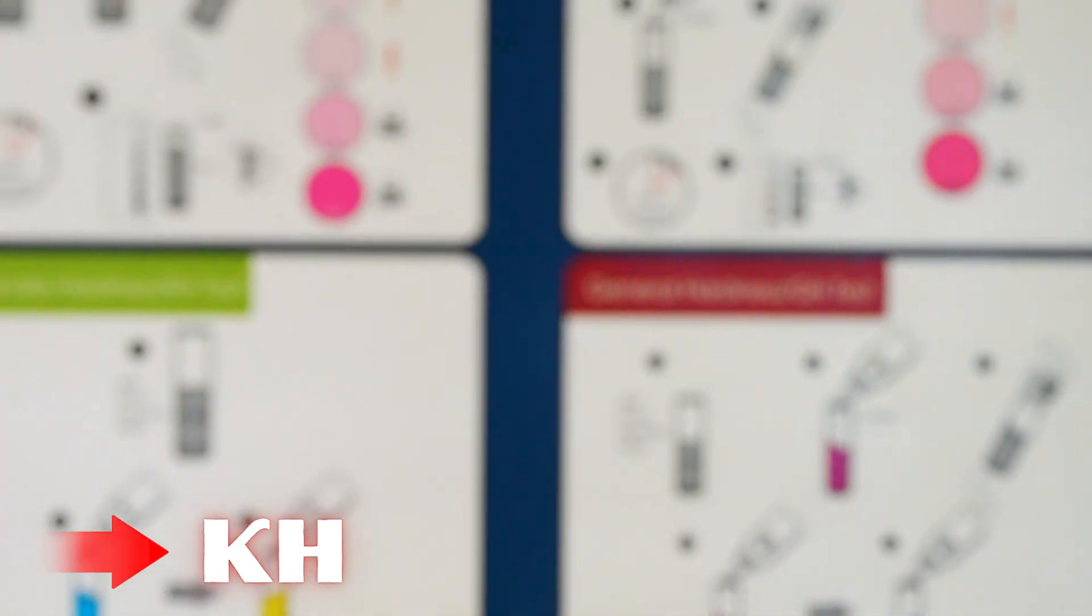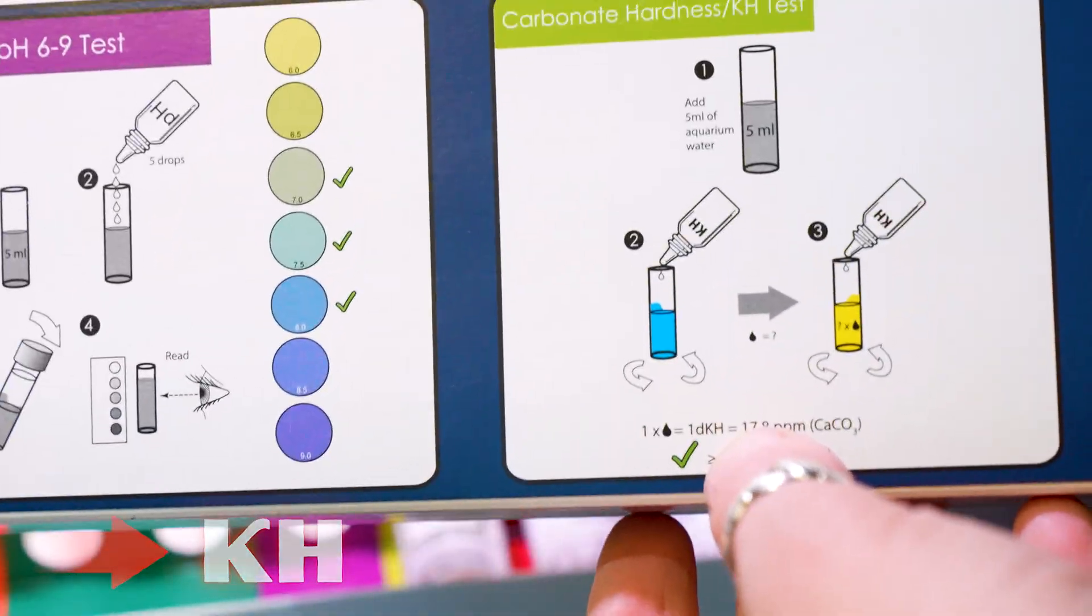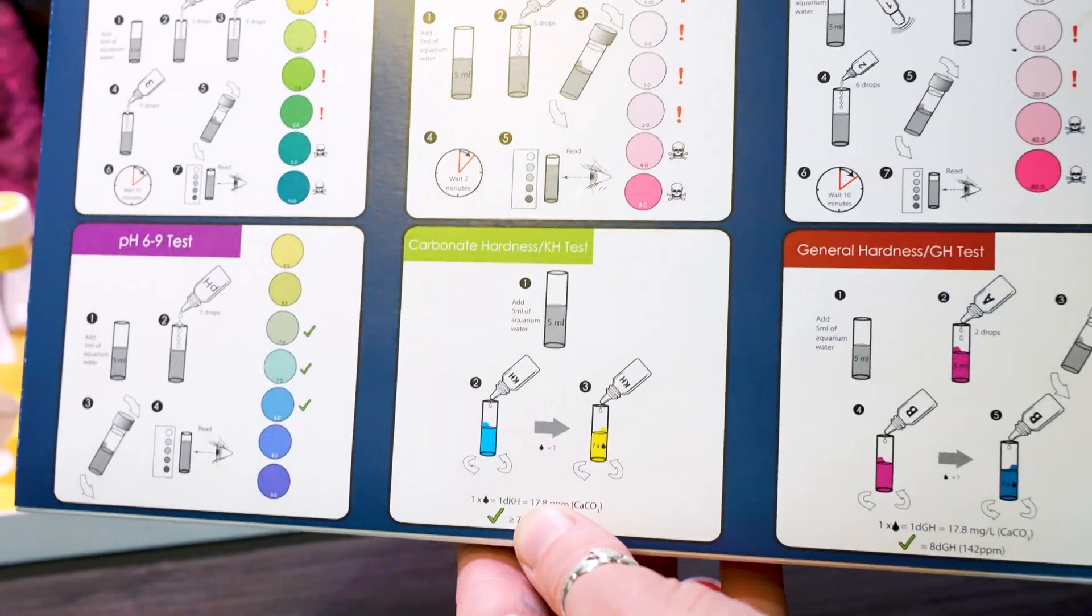All right, next up. KH, or carbonate hardness, also known as total alkalinity, is a measure of the buffering capacity of the water in your aquarium.